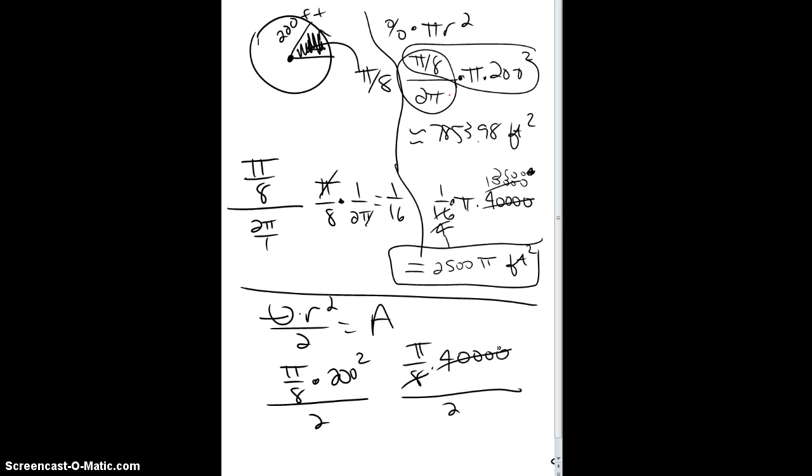So the 8 goes in the 40,000, what is that, 5,000 times, and then the 2 would go into the 5,000, 2,500 times, and I would still get 2,500 pi square feet if I wanted an exact answer. And then if I wanted decimal approximation, I could just do that on my calculator and see what that gives me.